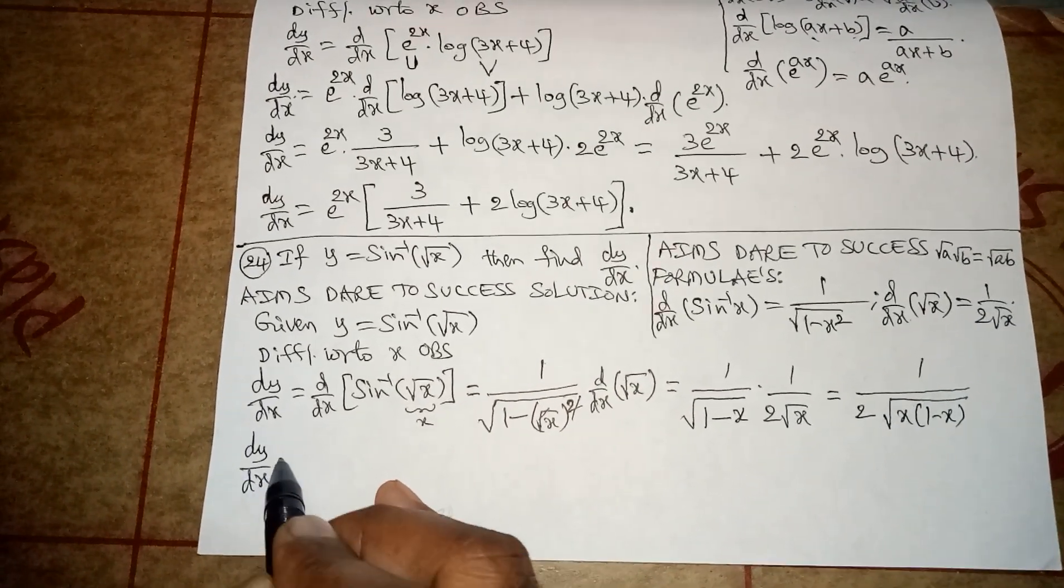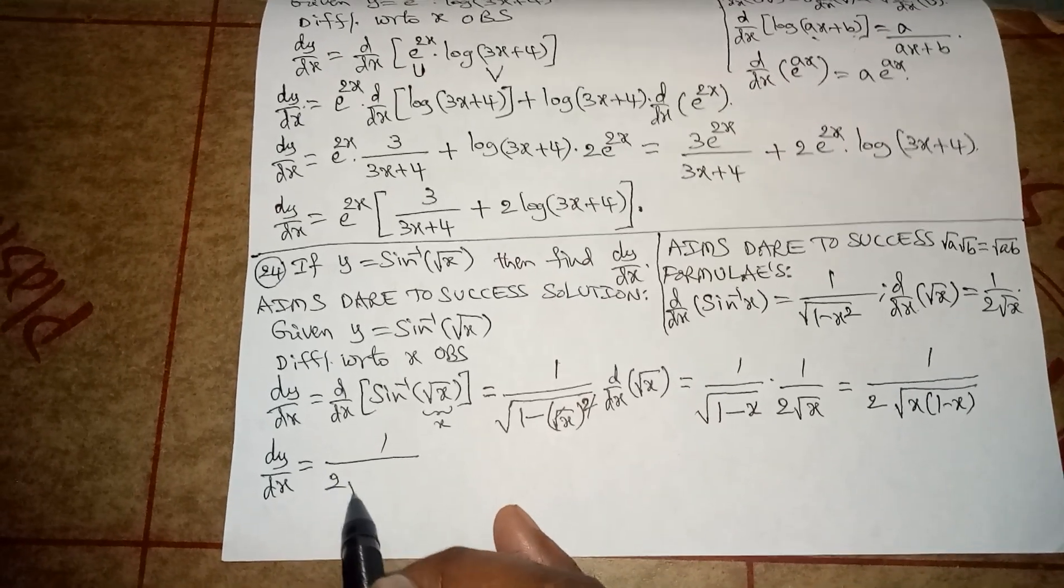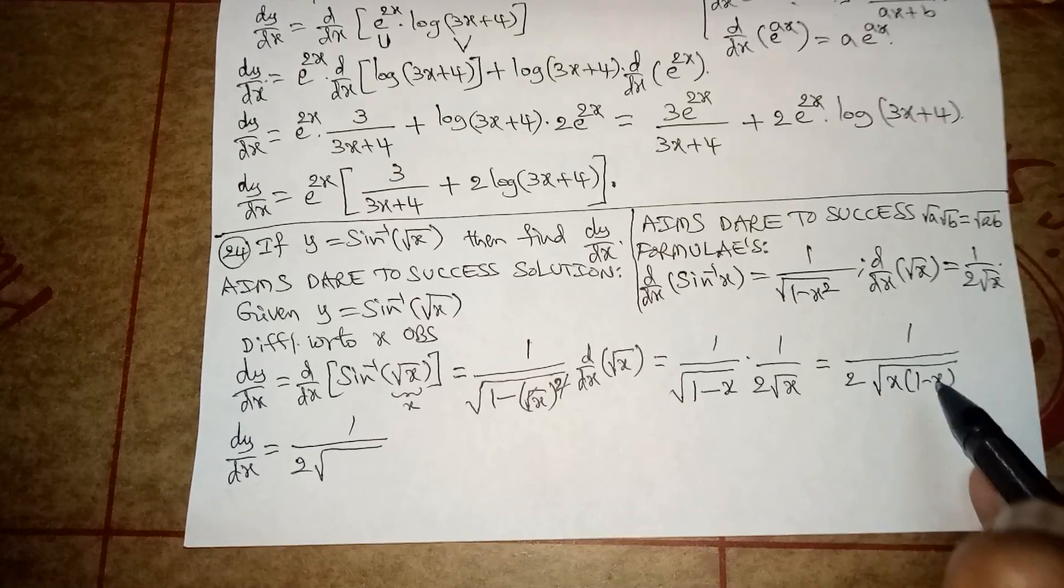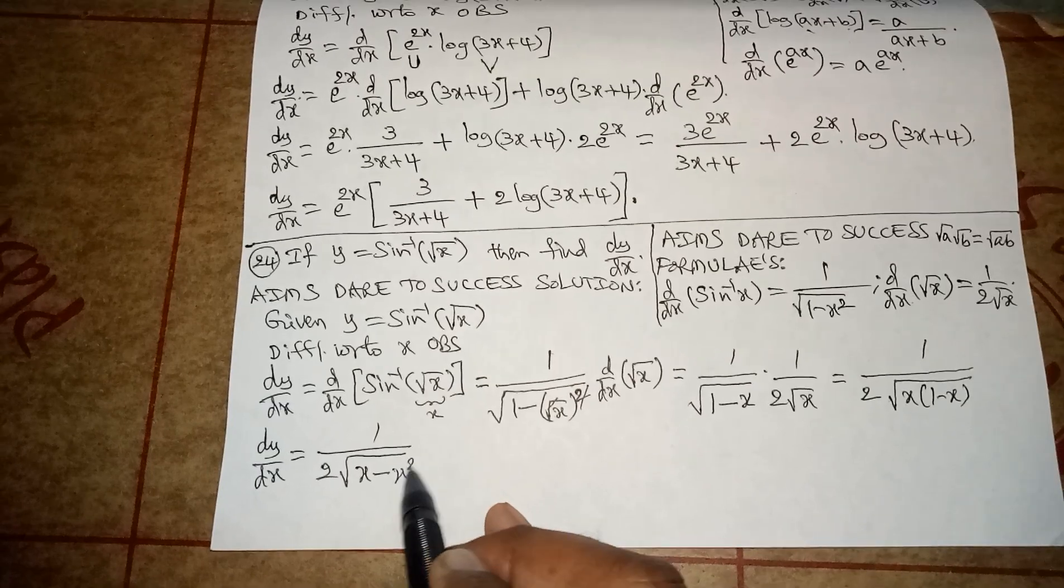dy by dx is equal to 1 by 2 into root, x multiplied inside, x into 1 is x minus x into x, x square. The answer is completed.